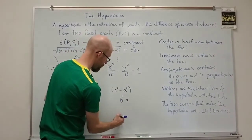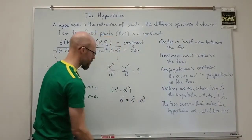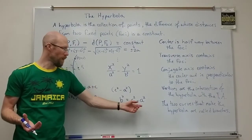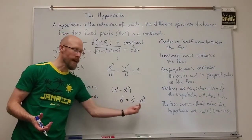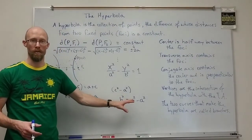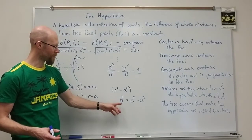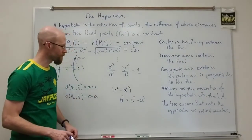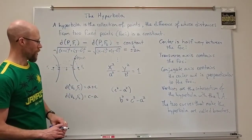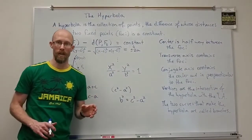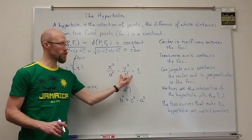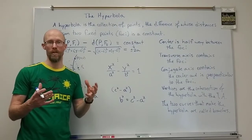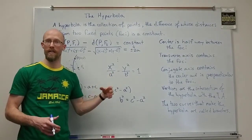So B² = c² − a², which is backwards from the ellipse (where it was B² = a² − c²). The minus sign in the hyperbola formula relates to the fact that it's the difference of distances. The positive variable is the one the hyperbola opens around — this is the direction of the hyperbola. With x² positive, the transverse axis is horizontal; if y² were positive, you'd get a vertical transverse axis.